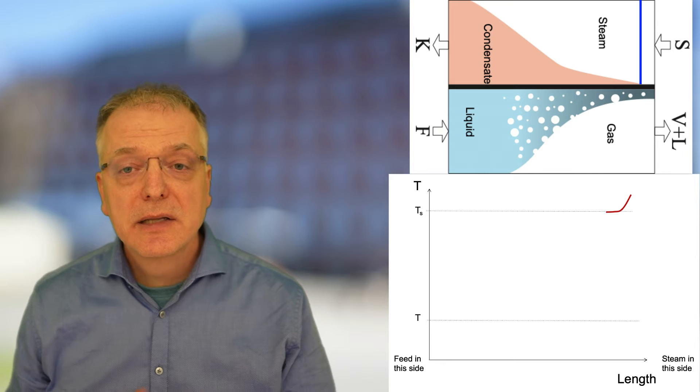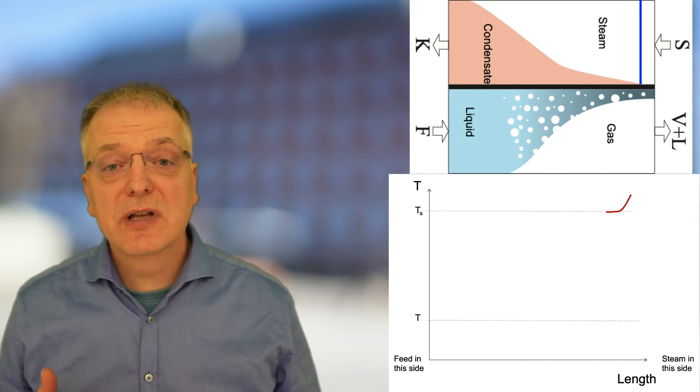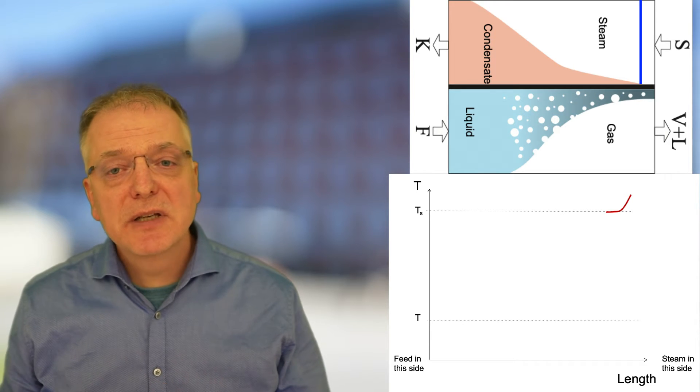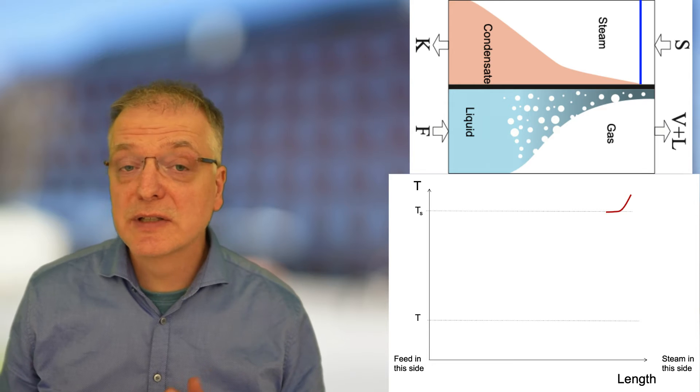On the steam side, the steam might come in overheated, that is, at a temperature above the condensation temperature. Thus, there might be a section where the temperature gradually decreases down to the condensation temperature.